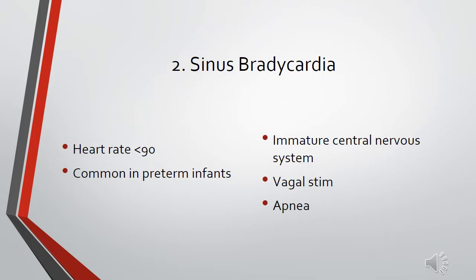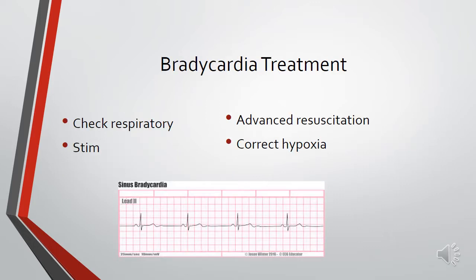Sinus bradycardia is a heart rate of less than 90 beats per minute and is very common in premature infants, usually due to an immature central nervous system. It may also be caused by vagal stimulation — suctioning, placing an esophageal probe, or a tube — and can be caused by apneas. Treatment is to check the respiratory situation, as bradycardias are most often caused by hypoxia causing depression of the myocardium. If the infant isn't responding to oxygen, provide stimulation such as patting the feet or a sternal rub. If that fails, resort to advanced resuscitation following NRP guidelines, and correct any hypoxia by providing oxygen or increasing support.